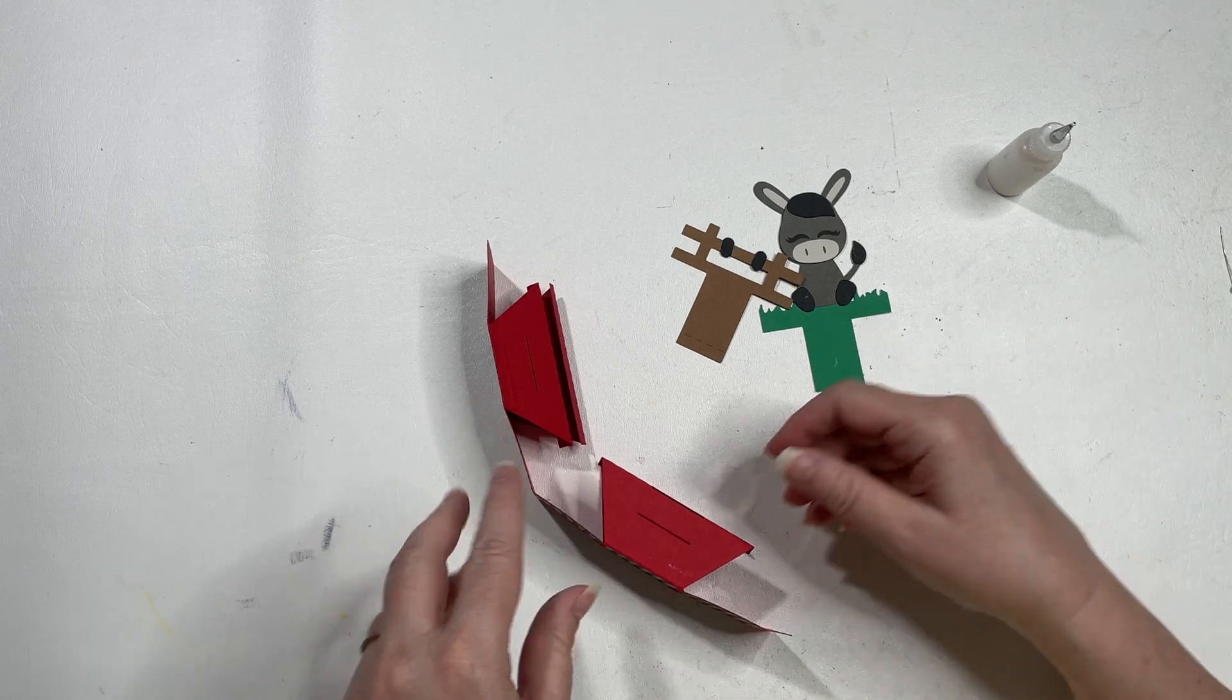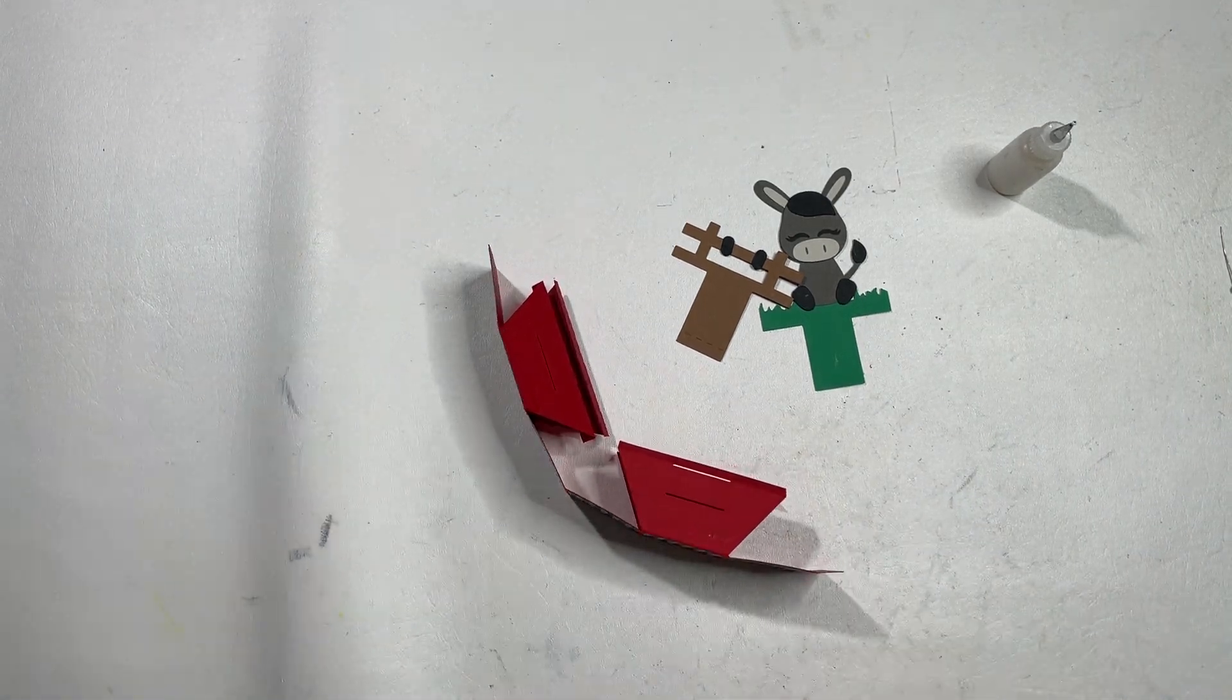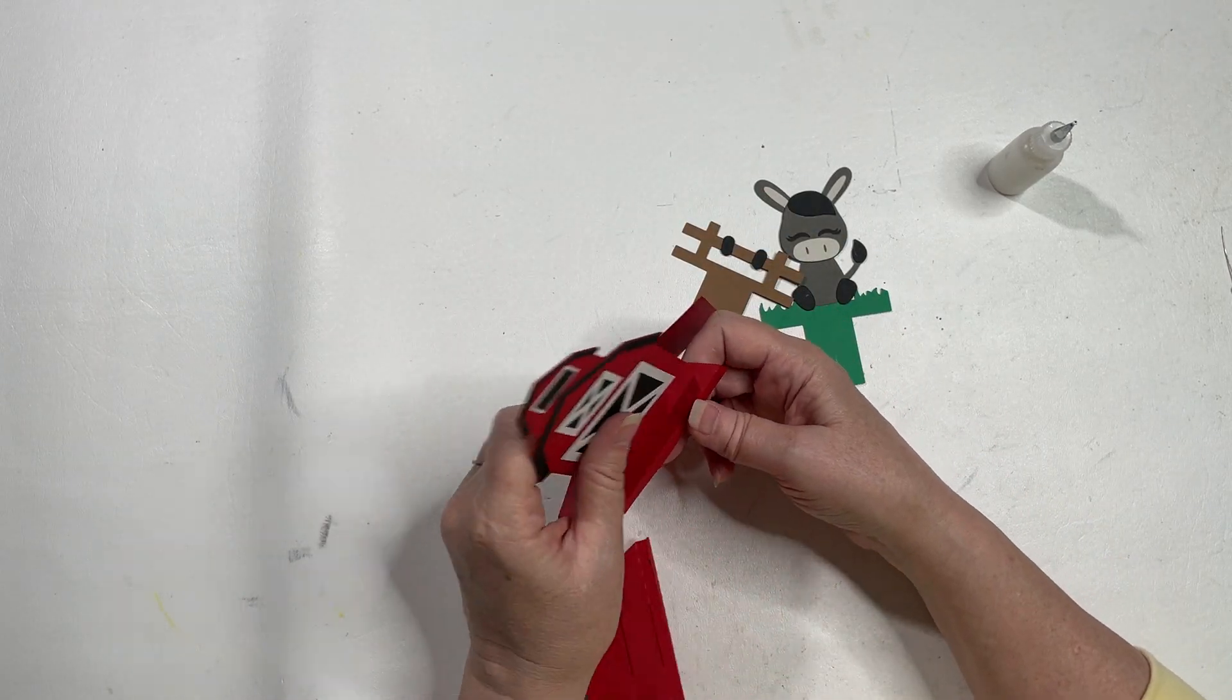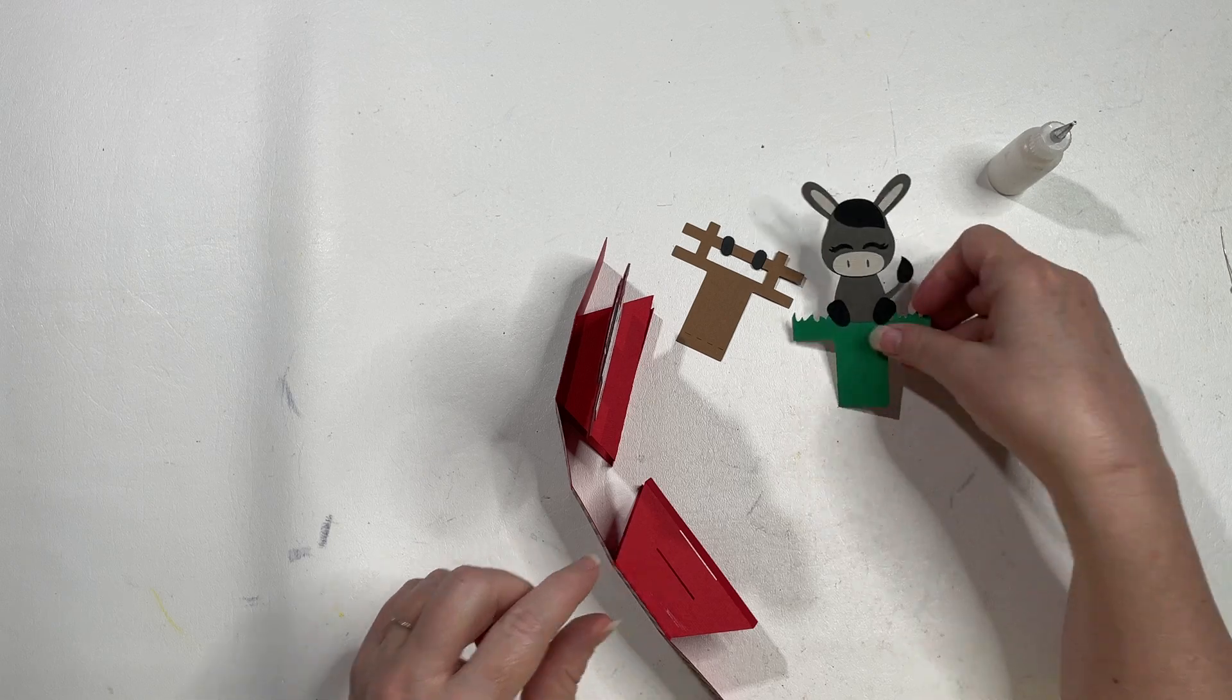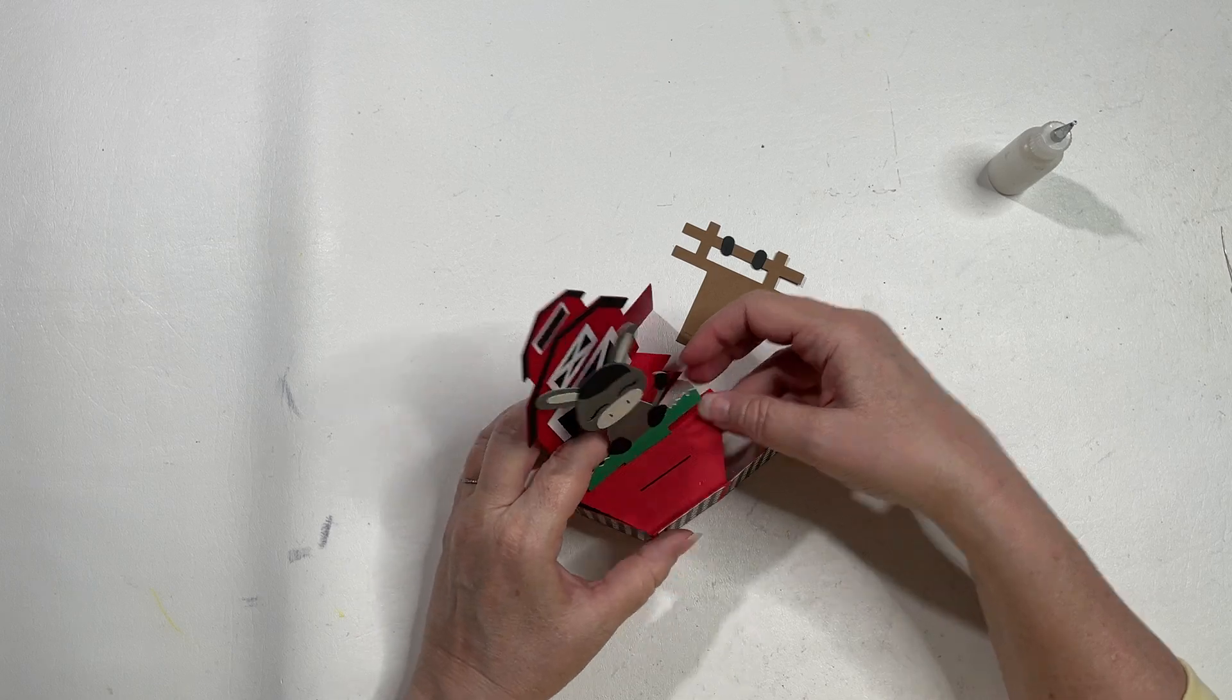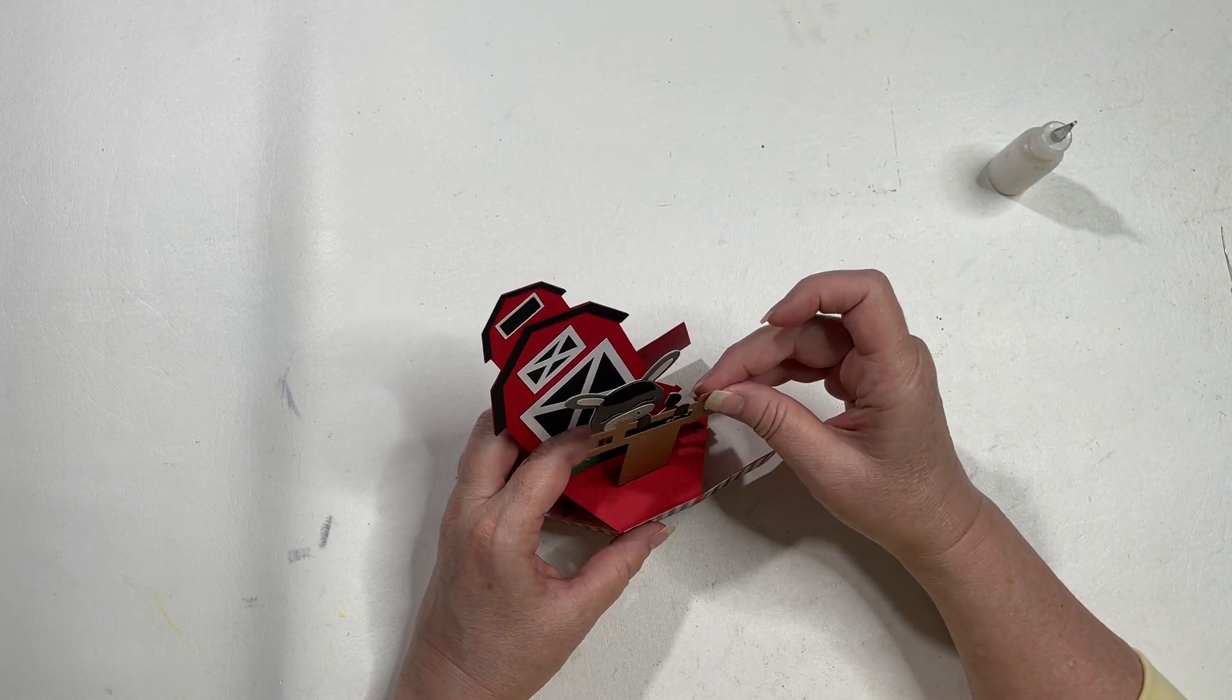And then we're going to pull in our card. Let's get our barn back out. So the barn goes to the back, and then the donkey is in the middle, and the fence is in the front.